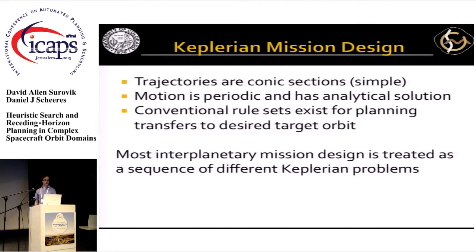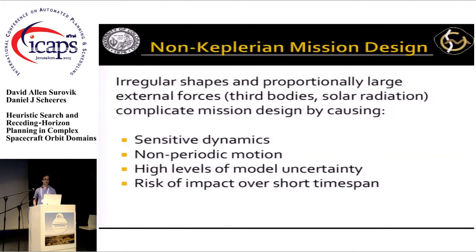Because of that, there are conventional rule sets that exist for planning transfers from one orbit to another in these kinds of systems. And in fact, even for more complicated scenarios such as interplanetary mission design, generally the first cut at a solution can be gained using a sequence of Keplerian problems.